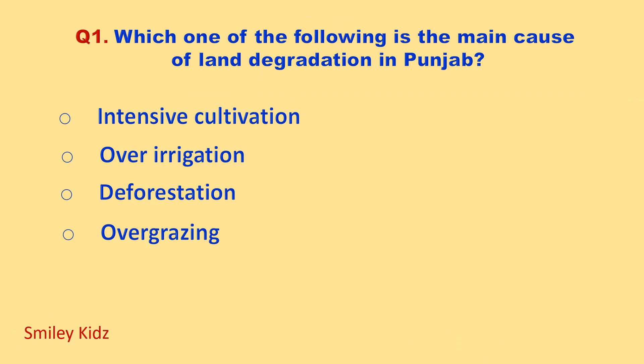Which one of the following is the main cause of land degradation in Punjab? Your options are: intensive cultivation, over irrigation, deforestation, over grazing. Your time starts now.